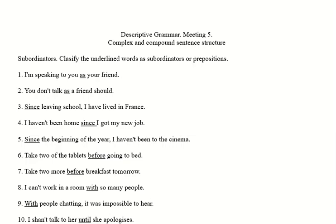It would be possible to argue that 'leaving school' taken as one noun phrase, but as we know about gerunds, they are verb forms which are sometimes treated as nouns. In this type of sentence, we would normally treat 'leaving' as a non-finite verb form, meaning that 'since' is a subordinator. So there's a difference between 'since leaving school' and 'since 1974' or something like that.